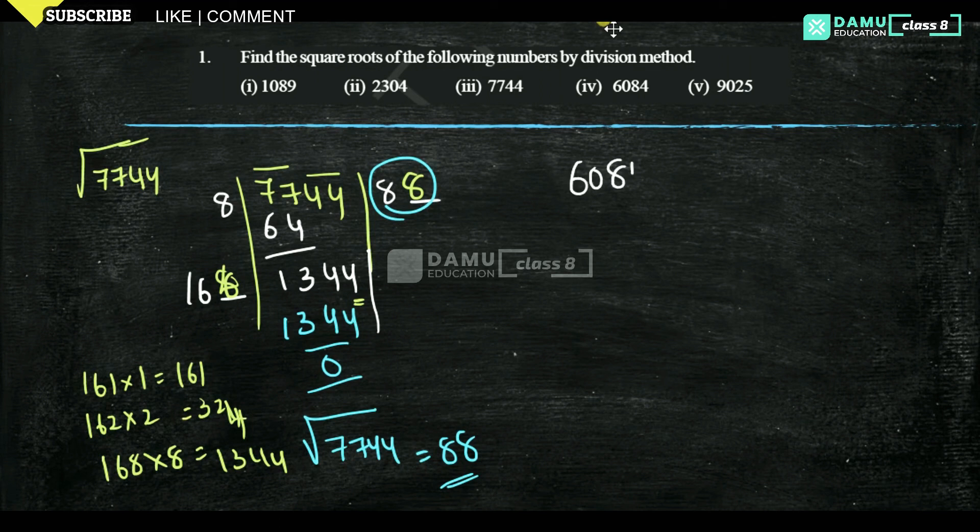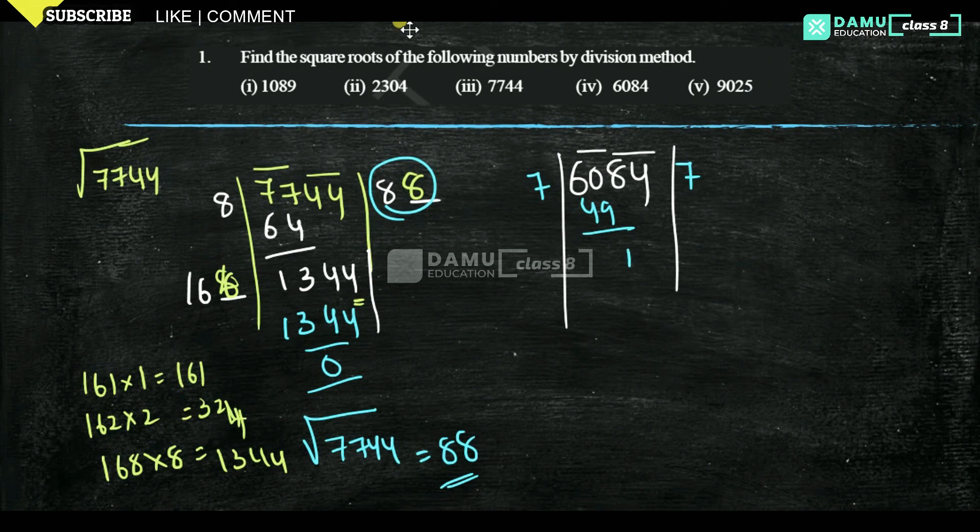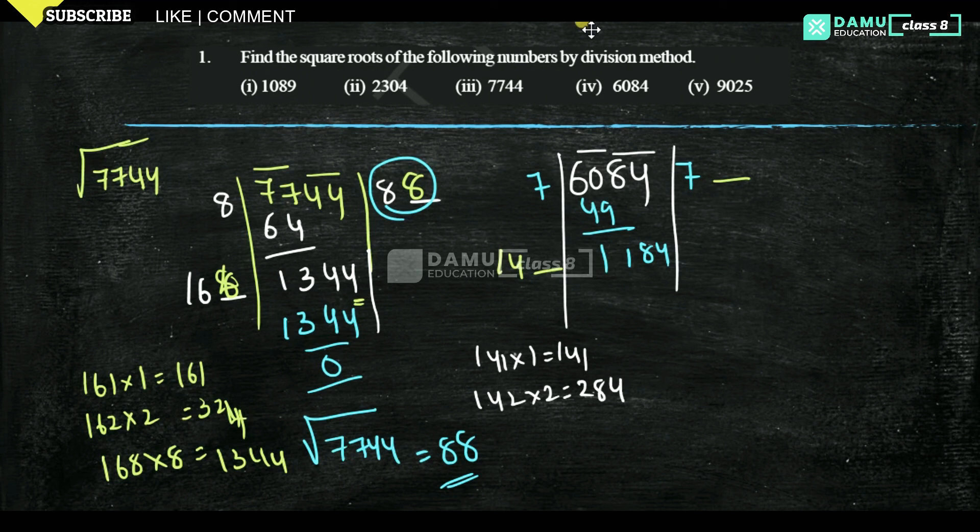Our next one is 6084. Divide this as one group of two digits, and below 60, what is the perfect square number? 8 times 8 is 64, then 7 times 7 is 49. Then you will get 11. So 84 as it is. 7 times 2 is 14. Then this place and this place are linked. 141 into 1 is 141, then 142 into 2 is 284. So the number here is 4.